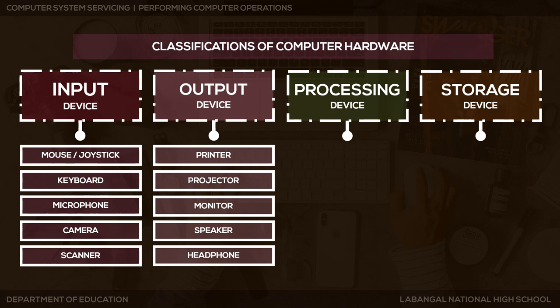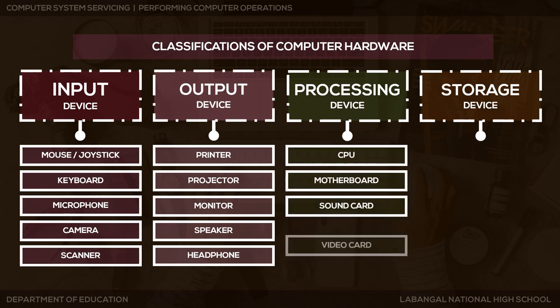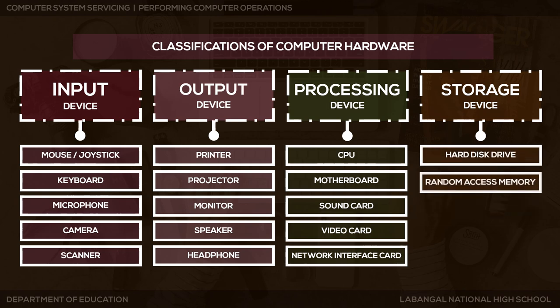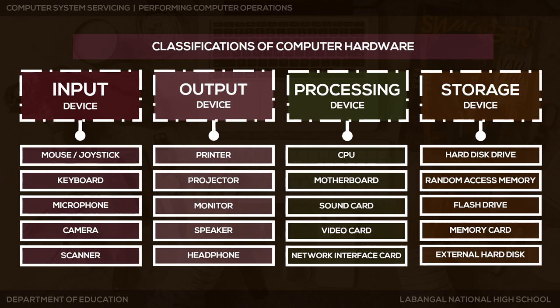Processing devices are the components responsible for processing information within the computer system. Under that, we have the CPU or central processing unit, motherboard, sound card, video card, and network interface card. And lastly, storage device is any type of computer hardware used for storing, porting, or extracting data files and objects — it can hold and store information both temporarily and permanently. Under that, we have hard disk drive, random access memory, flash drive, memory card, and external hard disk.